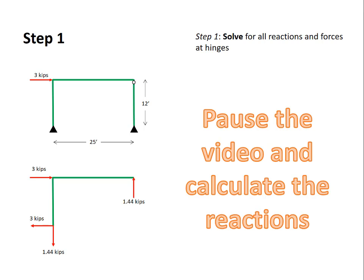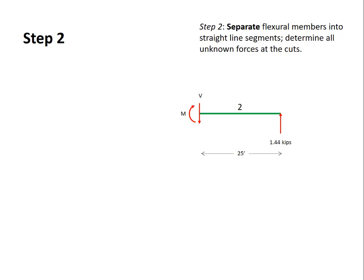So now you've finished computing these forces. You're convinced that these numbers are correct. Let's start breaking up this structure. Step two is to separate flexural members into straight line segments. Determine all the unknown forces at the cut. We're looking at the horizontal member that we previously called member number two. We see that at the cut we have two unknown forces, an unknown shear force and an unknown bending moment. We just use basic concepts of equilibrium to determine these two forces. Sum of the forces in the vertical direction tells us that the shear force is 1.44 kips.